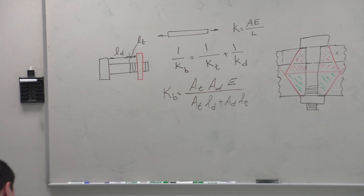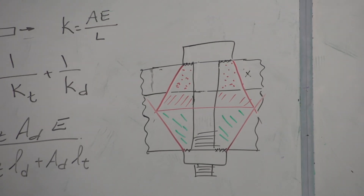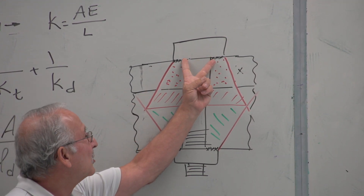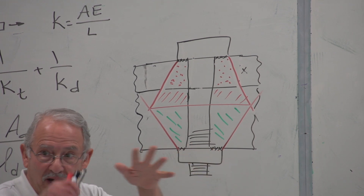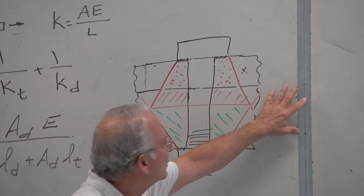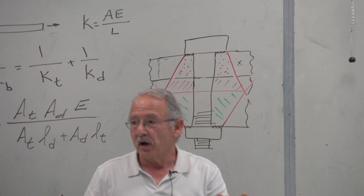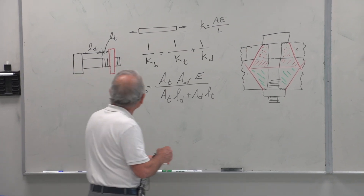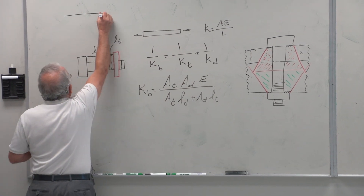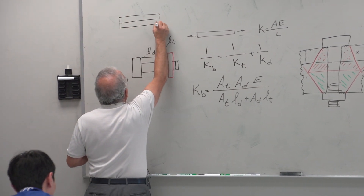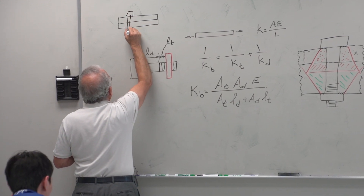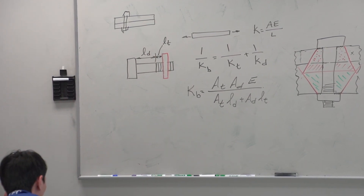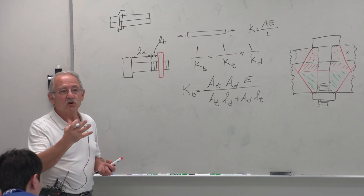Once you get away from the bolt, the load transfer diminishes appreciably. That's why, when connecting two long plates, you don't just put one bolt and say the whole thing is connected — out at the edges that connection is not very much. That's why you need two, five, or ten bolts, however many you need to make the connection.